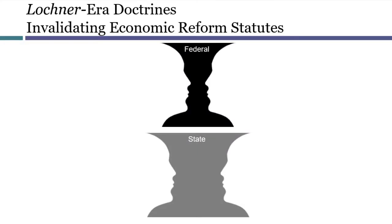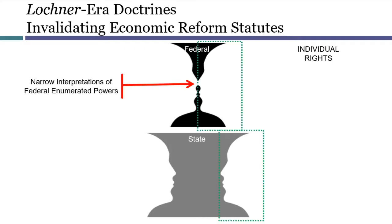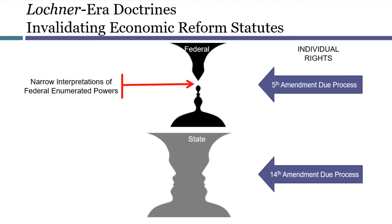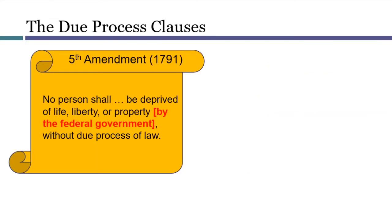By way of reminder, from approximately 1890 to 1937, economic reform laws enacted by the federal government were called into question by narrow interpretations of Congress's enumerated powers. Meanwhile, the Due Process Clause was applied in ways that made it difficult for both the federal government and state governments to pursue economic reforms. Due Process is an individual right, symbolized by the right-hand faces in the diagram. As rights to be free of economic regulations increased, the ability of government to enact these laws was correspondingly limited at both levels. The Due Process Clause reflects ideas that can be traced back hundreds of years to English law from the time of the Magna Carta in the year 1215.